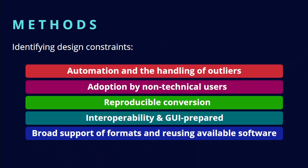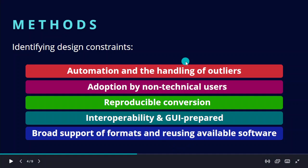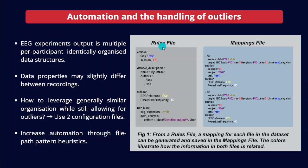For the development of the software, we first identified a set of constraints, then we made design decisions based on them, as explained in the next slides. The first constraint is that the software must be able to automate the conversion while simultaneously and gracefully handling the edge cases. To handle this situation, we use two files: a rule file, which encodes the general conversion rules for the EEG dataset, and a mappings file, which is an instantiation of the rules for each recording. This allows for specific details to change.